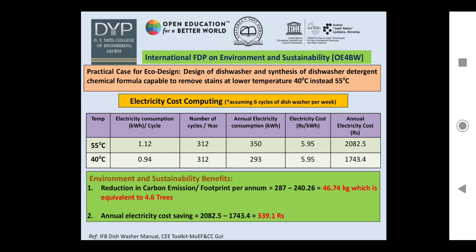Similarly, electricity cost is computed using an average electricity cost of ₹5.95 per unit. Annual electricity cost is annual electricity consumption multiplied by electricity cost, coming to ₹2082.5 at 55°C and ₹1743.4 at 40°C. The environment and sustainability benefits from this reduction in operating temperature are: a reduction in carbon emission of 46.74 kg per annum, equivalent to 4.6 trees, and annual electricity cost savings of ₹339.1.